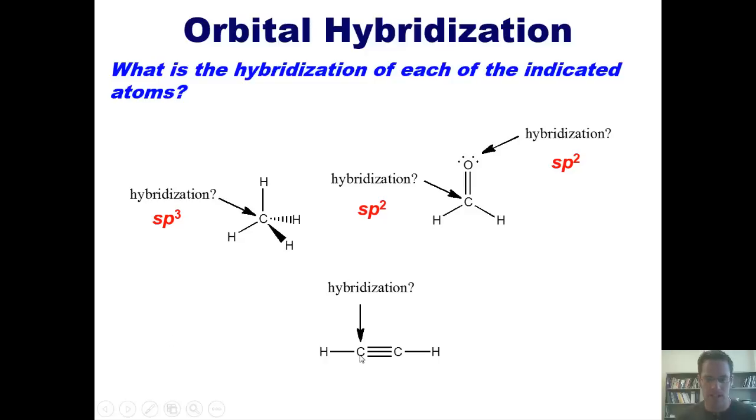Over here, I've got a carbon that has a hydrogen to the left and a carbon to the right. Once again, the fact that it has a triple bond there, completely irrelevant when counting the number of things. It has two things. Therefore, its hybridization is sp. And I have to make sure that I put down the correct finger so that I'm not accidentally giving you an obscene gesture.